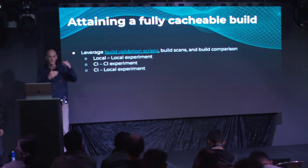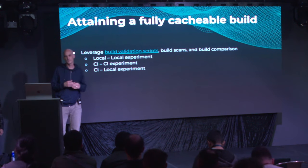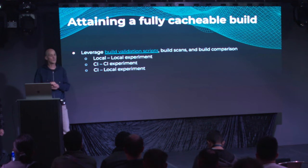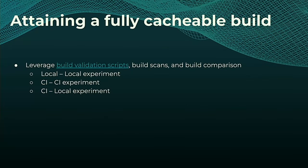To fulfill these requirements, we've created build validation scripts, available for free on GitHub as part of Gradle Enterprise. Combined with build scans and the build comparison feature, we can efficiently detect what is taken from the cache, what is not, why it's not taken, address it, and rerun the experiment with very little effort. It should be a very productive exercise.